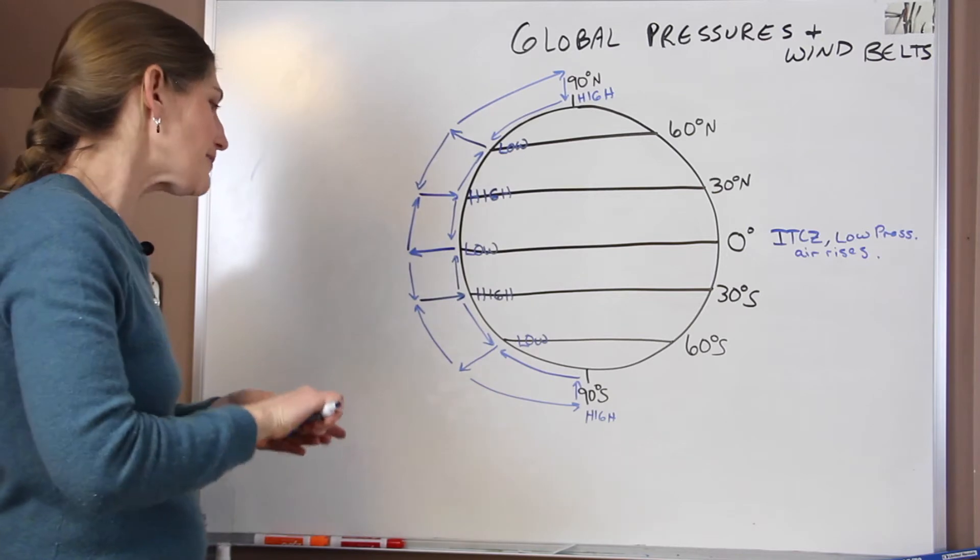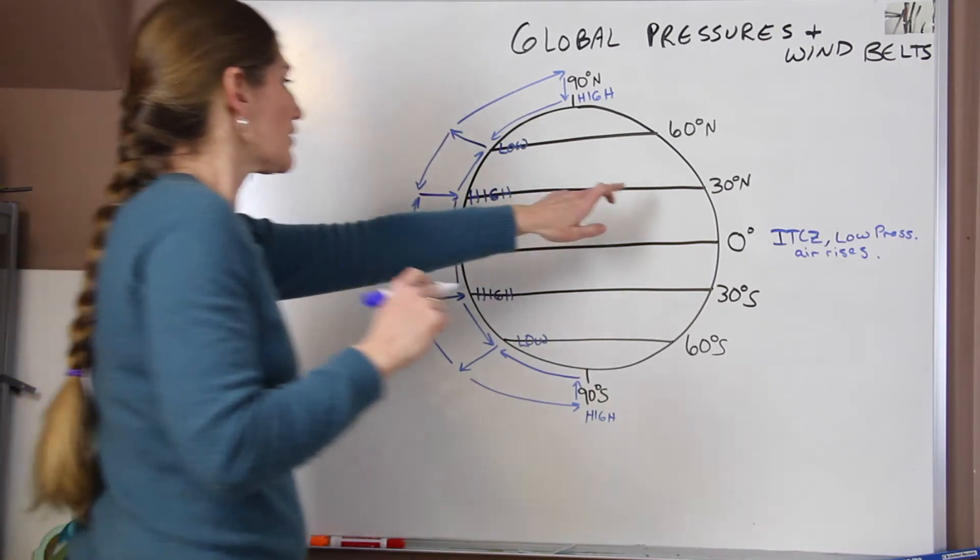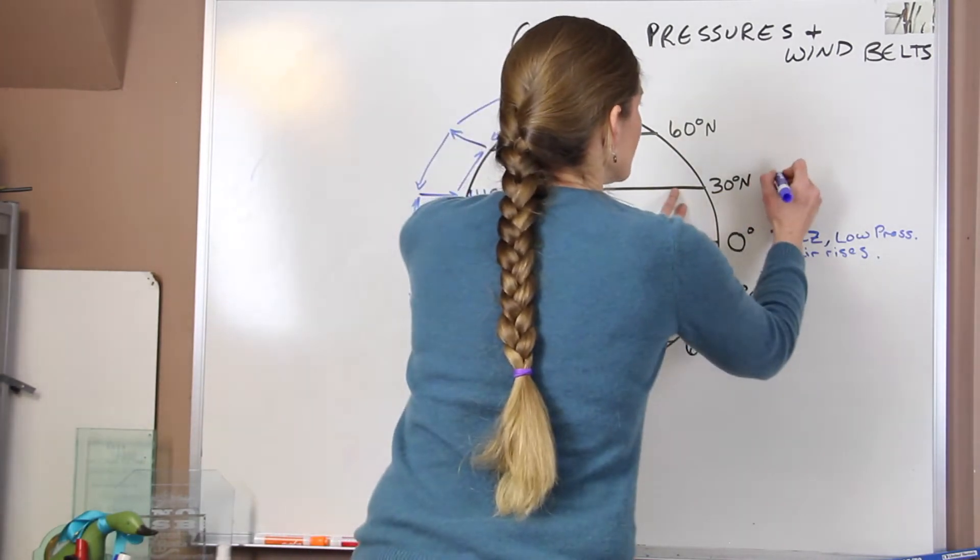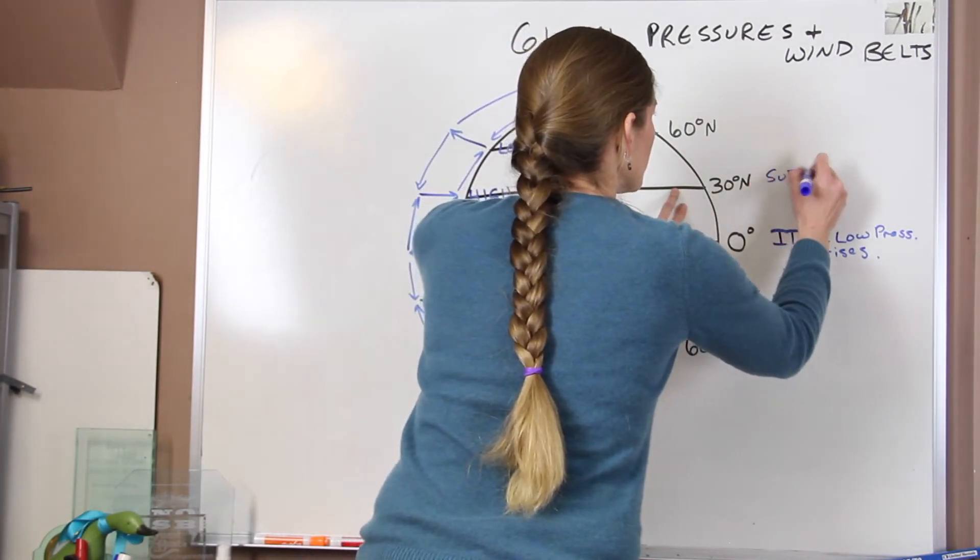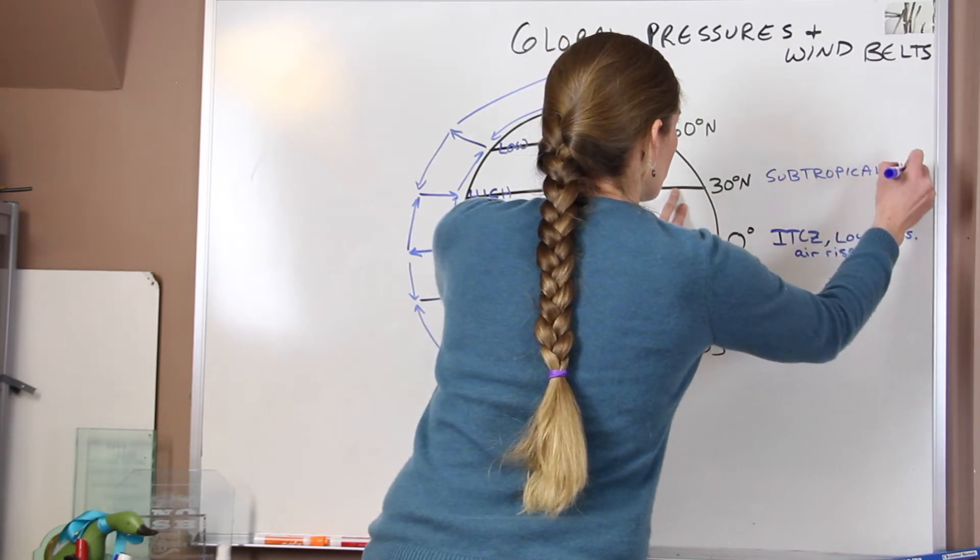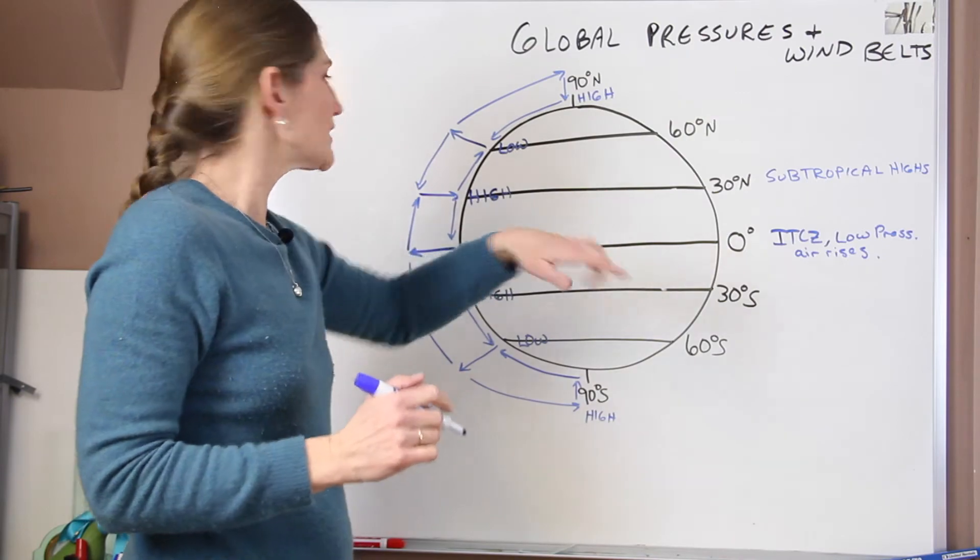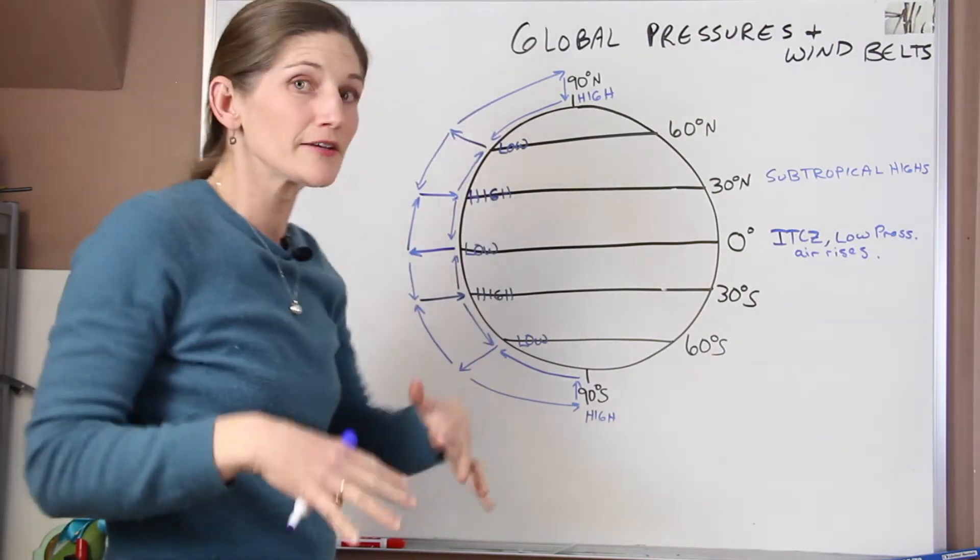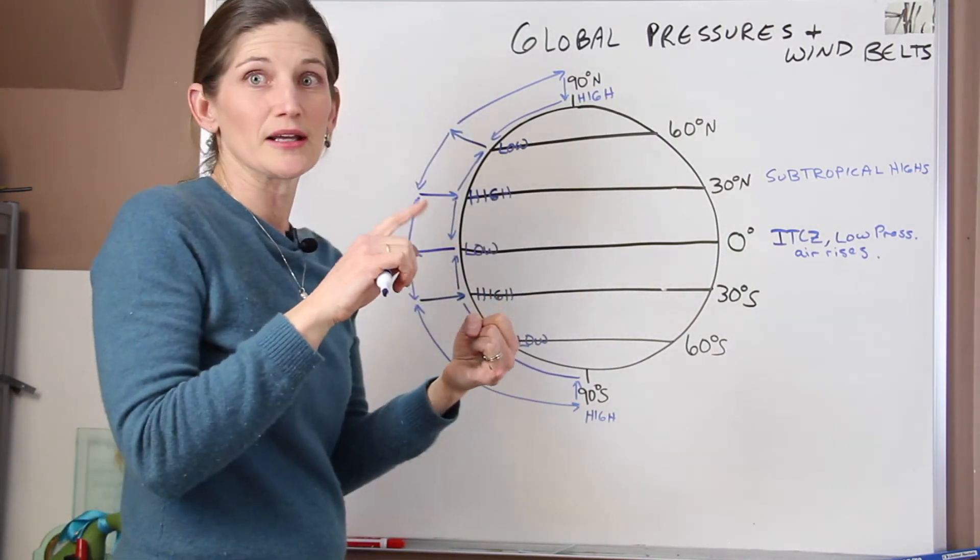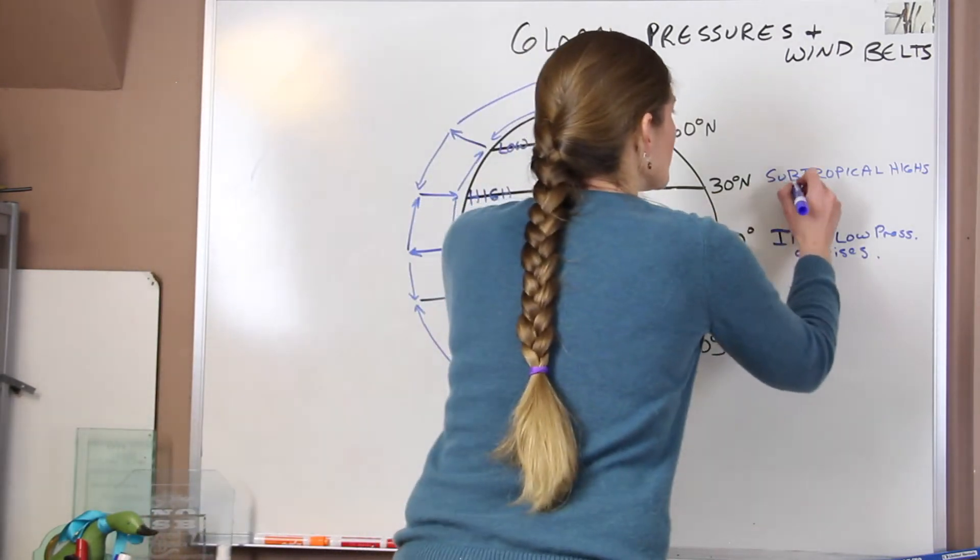So a couple things about these highs and the lows. Right here at 30 degrees north and south latitude, these are our subtropical highs. They are places, because that air is descending from above, it tends to be cloudless, windless. These are often called our horse latitudes.